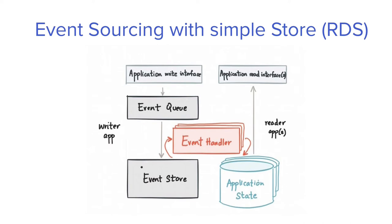There should be some kind of event store. Consider a simple financial transaction system where debits and credits are happening. In that case it's better to store all those events happening on your account inside an event store, which will hold the complete history of events that have occurred against your database. Here we have a writer application sending events to an event queue, which can be any queue technology.